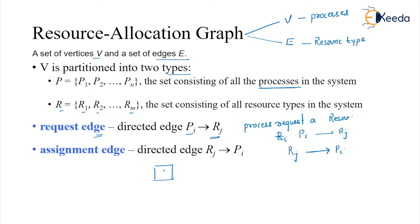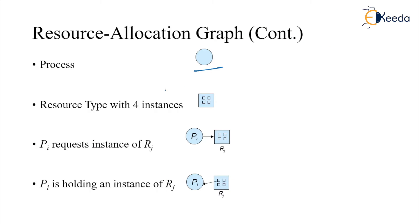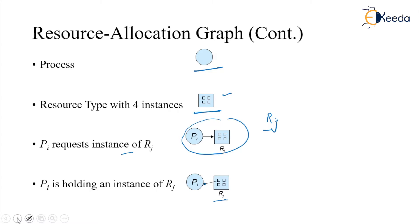For example, if we have a resource with two instances and Pi has been allocated resource type R1, that is the allocation part. If it needs R2 and there is a single instance, that is the request part. A circle represents a process; a square represents a resource type with its instances. Pi requesting an instance of Rj is depicted with an arrow from Pi to Rj, and Pi holding an instance of Rj is depicted with an arrow from Rj to Pi.